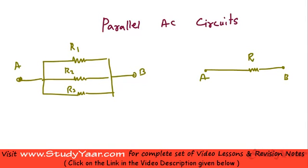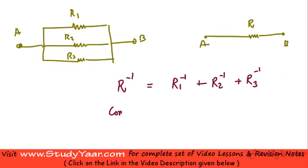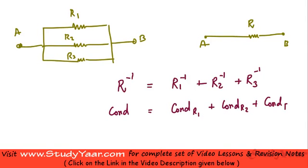If your equivalent resistance is R, then you have the relationship: the inverse of R is equal to the inverse of R1 plus the inverse of R2 plus the inverse of R3. Essentially, the equivalent conductance equals the conductance of R1 plus the conductance of R2 plus the conductance of R3.